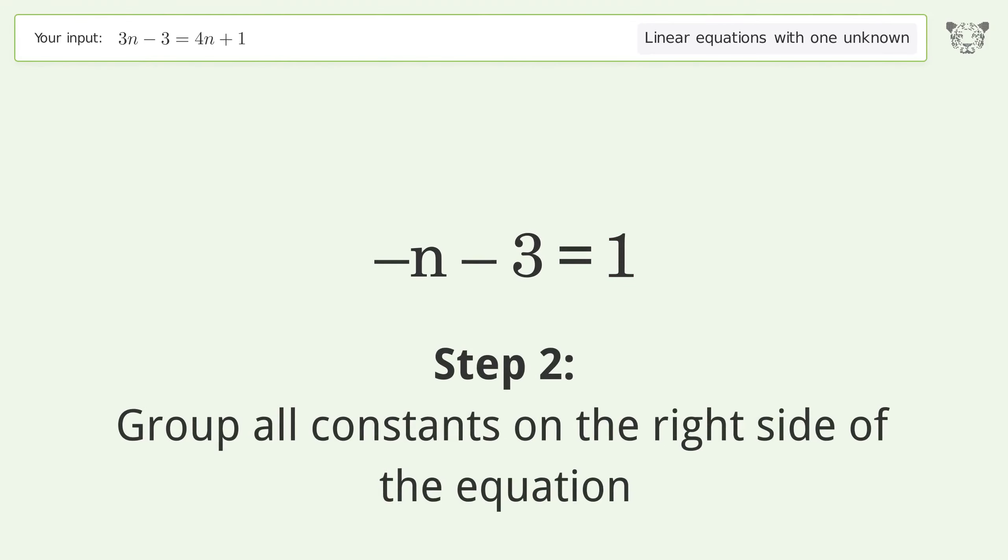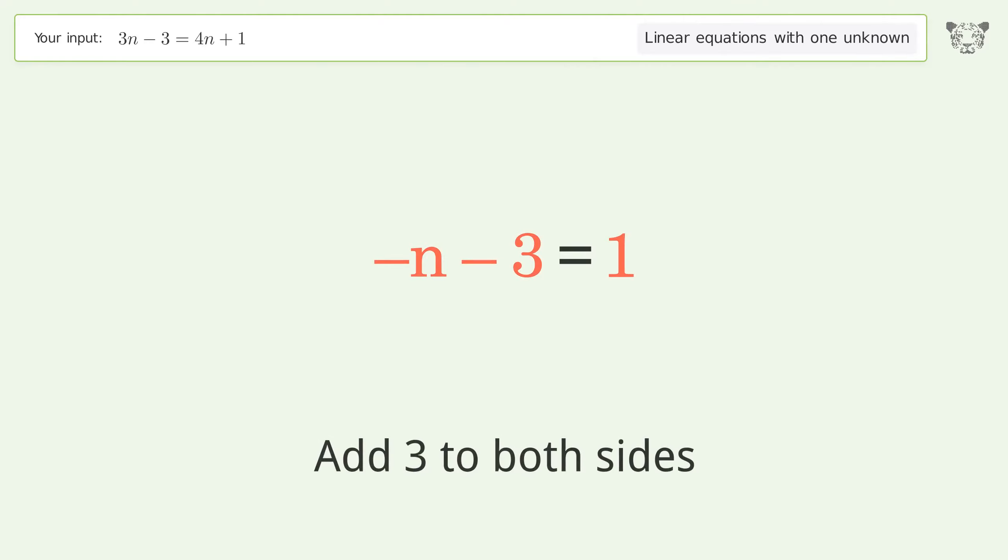Group all constants on the right side of the equation. Add 3 to both sides. Simplify the arithmetic.